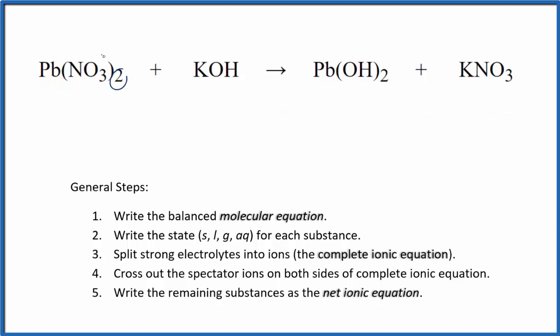So I can see I have two nitrates here, just one here. So let's put a 2 in front of the KNO3. Now we have two potassiums. We put a 2 here. We have two hydroxides, two hydroxides, a lead, and a lead. This is the balanced molecular equation.